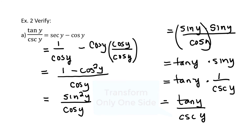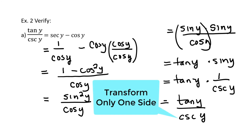Please note all the transformations took place on one side of the equal sign. That is a fundamental requirement when verifying identities.